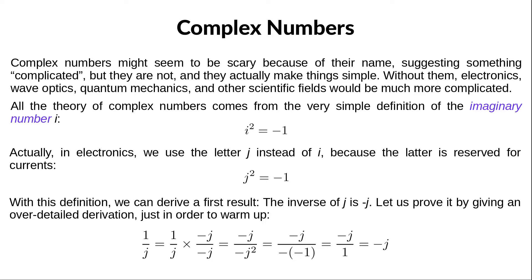All the theory of complex numbers naturally arises from the simple definition of the imaginary number i. We define it as the number whose square is equal to negative 1. In other words, i is the square root of negative 1. Now, in electronics, the letter i is reserved for the current, so we prefer to use the letter j to represent this imaginary number.